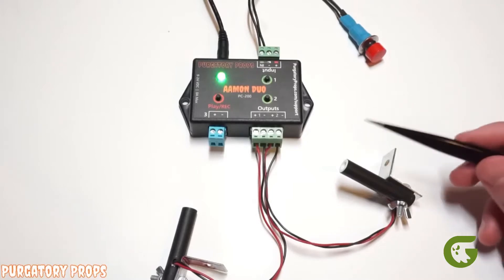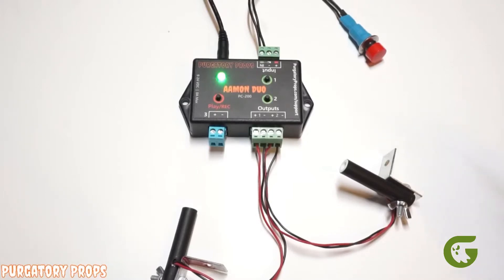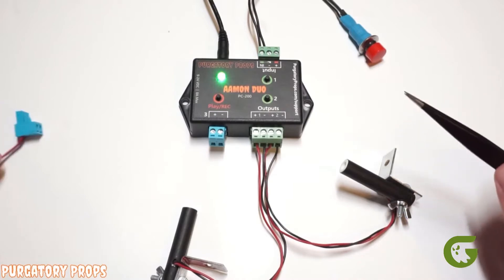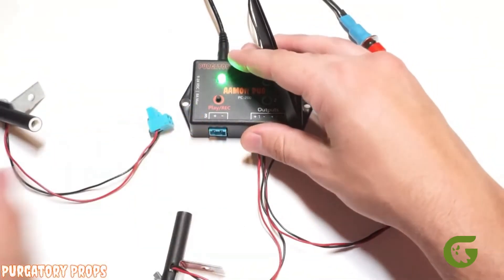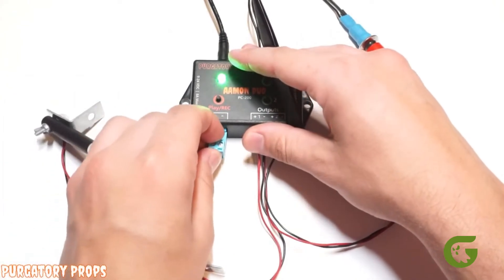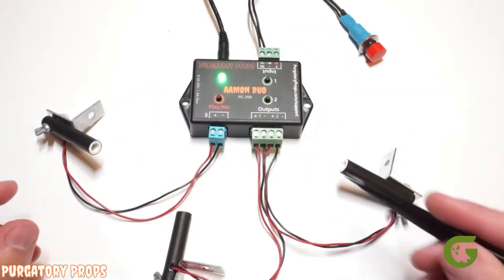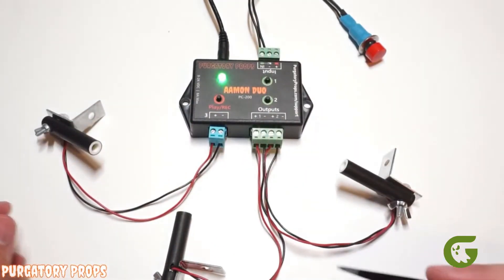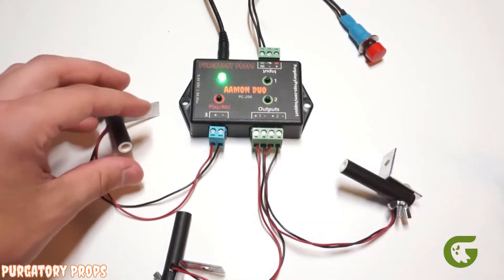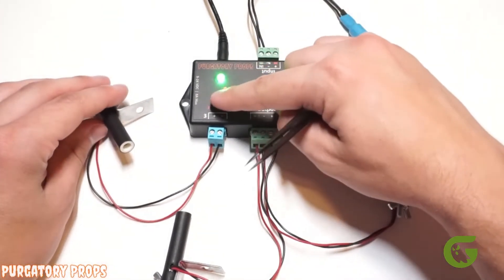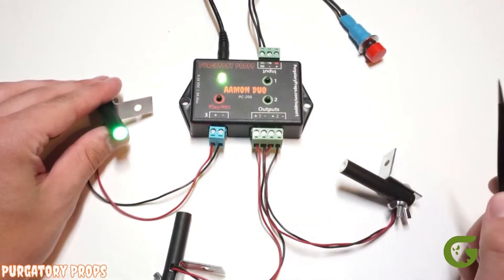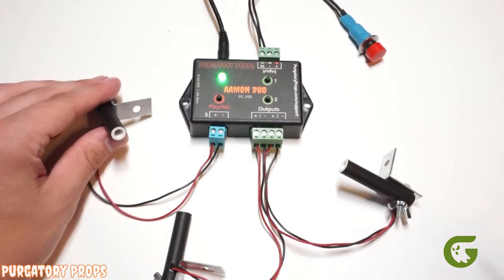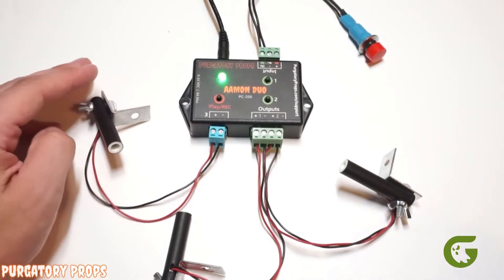So the third output is just one of the things that makes the Amon Duo so special. Let's look at its default behavior. So we changed our setup a little bit, we just have all LEDs now just to simplify things. So if we go ahead and play our animation, this third output turns on and it's on for the entire length of the animation. So that is the default behavior.